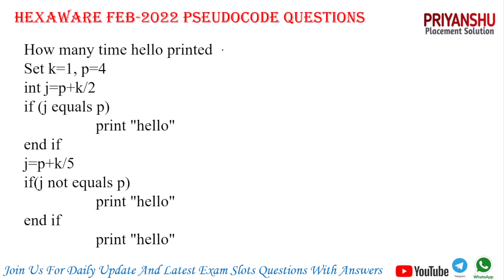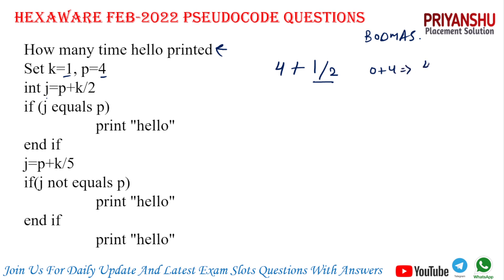Next: how many times is 'hello' printed? We have k = 1, p = 4. First, j = (p + k) / 2 = (4 + 1) / 2. By BODMAS, 1 / 2 = 0 (integer division), so j = 4 + 0 = 4. Now j == p (4 == 4), condition is true, so 'hello' is printed once.